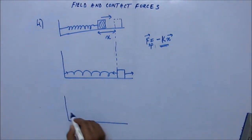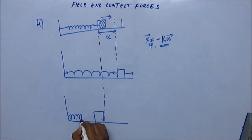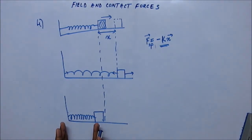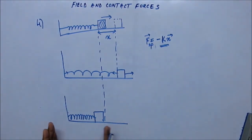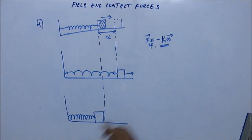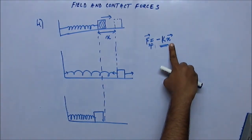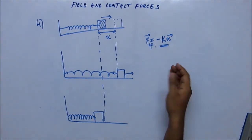Now if we had compressed the spring instead of elongating it, then again due to compression there will be a spring force. Since spring force is a restoring force, it will try to push the block outward so that the spring returns to its normal, relaxed, unstressed position. So the spring force will be acting towards the right on the block. If the displacement is towards the left, the spring force acts towards the right — always opposite to the displacement — which is why the spring force formula carries a negative sign.